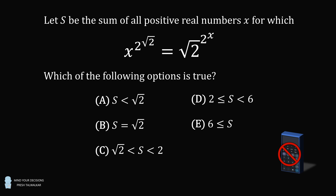This is a no calculator question, and it comes from a Math Olympiad qualifying question in America. This is the 2021 AMC 12B problem 12. Pause the video if you'd like to give this problem a try, and when you're ready, keep watching to learn how to solve this problem.